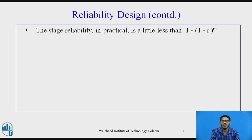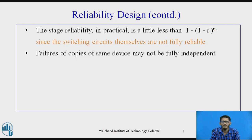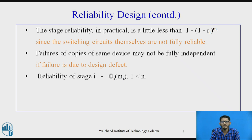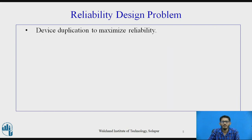In practice, the stage reliability may not be exactly equal to 1 minus (1 − ri) raised to mi, because the switching circuits themselves are not fully reliable, and failures of copies of the same device may not be fully independent if the failure is due to some design defect. So the reliability of stage i is generally given by a function φi(mi), and the reliability of the entire system is the product of φi(mi) for i from 1 to n. There is a need for device duplication to maximize reliability, and device duplication actually increases the reliability.